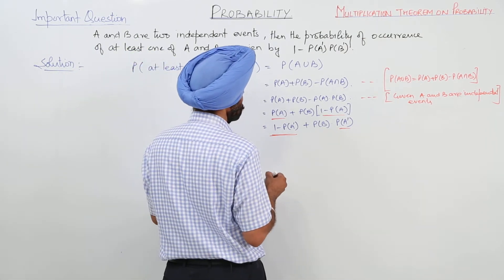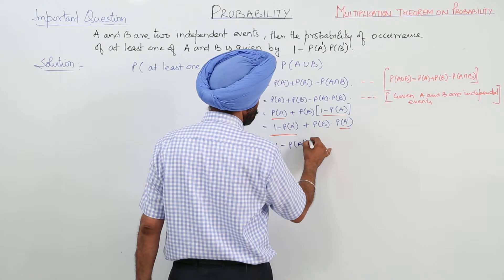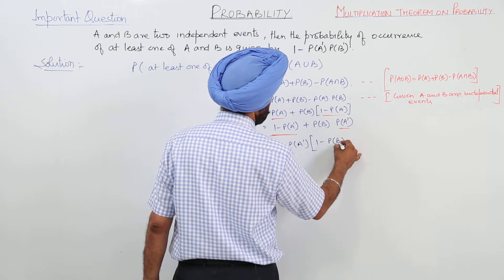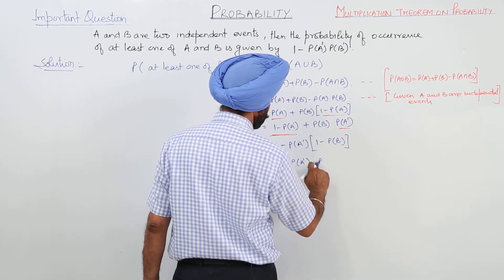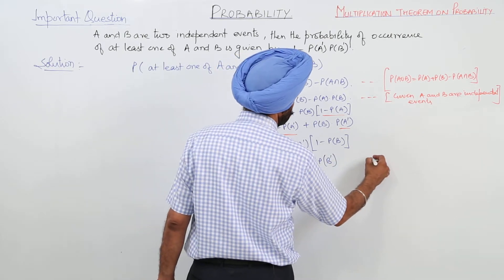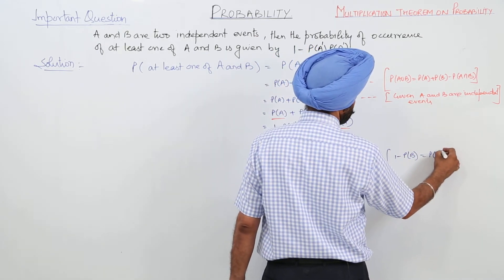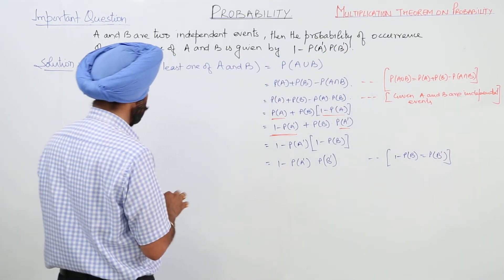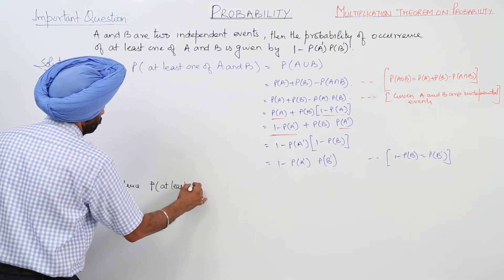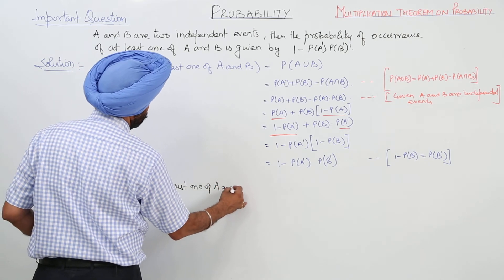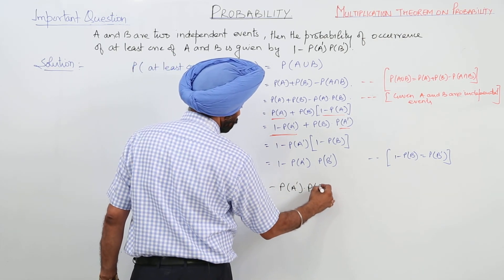Now, 1 minus (1 minus P(A')) times (1 minus P(B)) simplifies to 1 minus P(A') plus P(A') times P(B'). Hence, the probability of at least 1 of A and B equals 1 minus P(A') times P(B'). Proved.